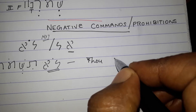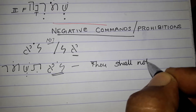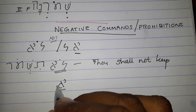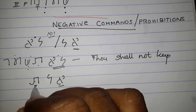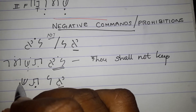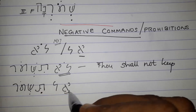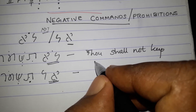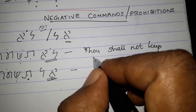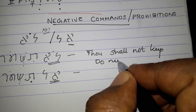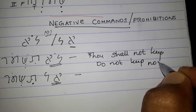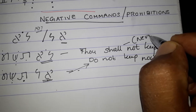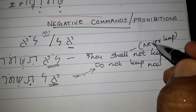Another word used is 'al' — for example, 'al tishmoor'. 'Al' indicates immediate prohibition, meaning 'do not keep now.' That is the meaning of 'al' — do not keep now.